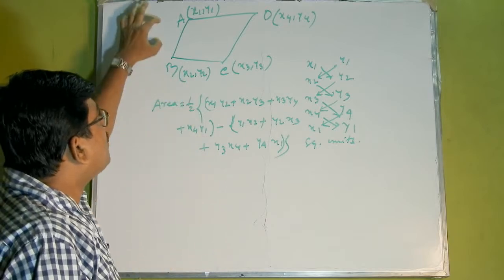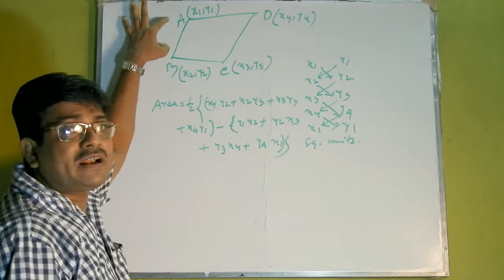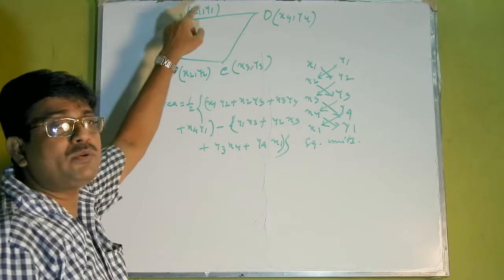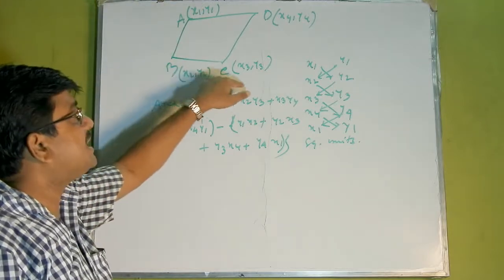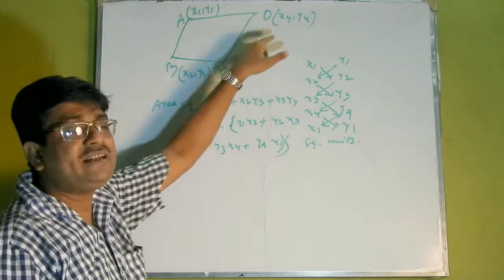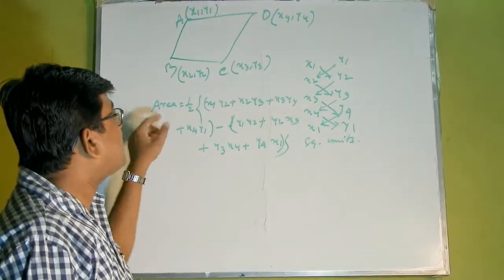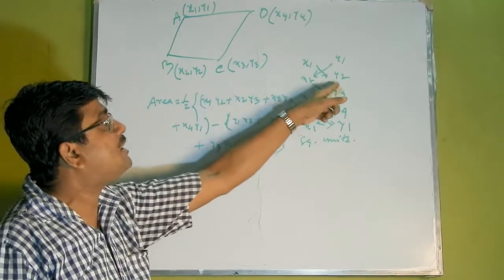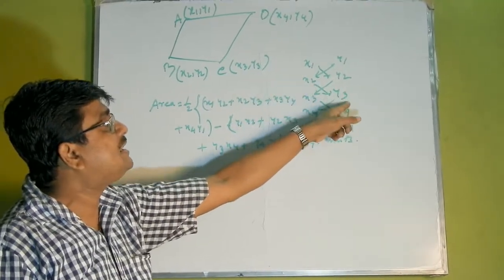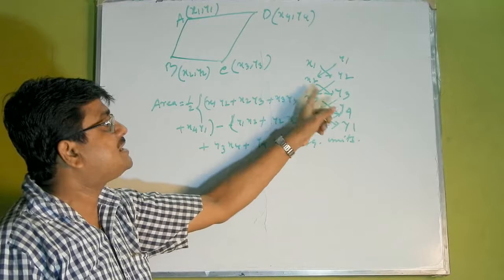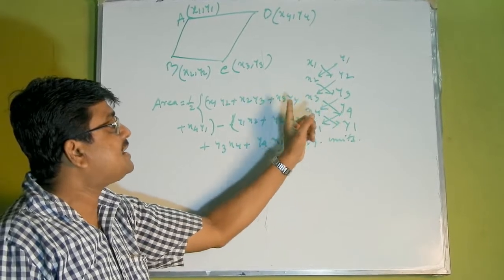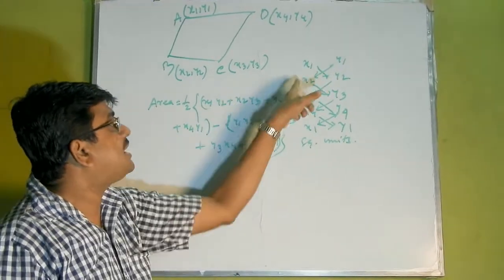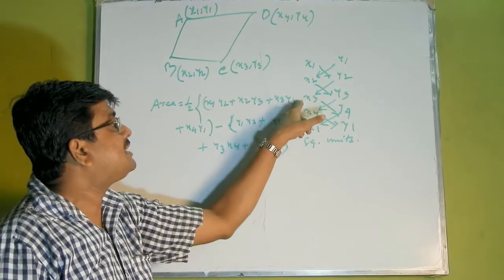Again, if we consider quadrilateral ABCD with four vertices A(X1, Y1), B(X2, Y2), C(X3, Y3) and D(X4, Y4), then area of the quadrilateral = 1/2 × |(X1·Y2 + X2·Y3 + X3·Y4 + X4·Y1) − (Y1·X2 + Y2·X3 + Y3·X4 + Y4·X1)|.